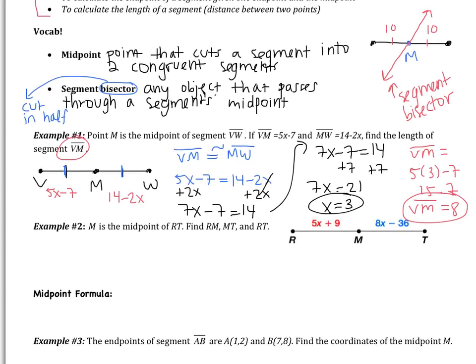Now example 2 — you're going to do this one on your own. M is the midpoint of RT; find RM, MT, and RT. Pause the video and try it. When you're ready, let's see how we did. Remember to show that M is a midpoint because it creates two congruent segments. That midpoint is the whole key, because it tells you that RM is congruent to MT, so you can set them equal.